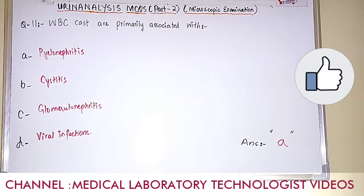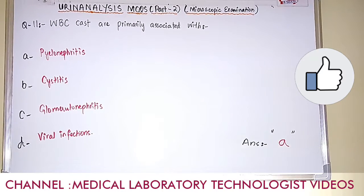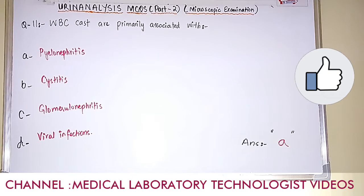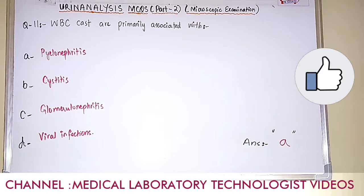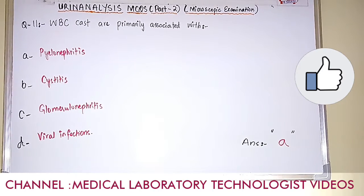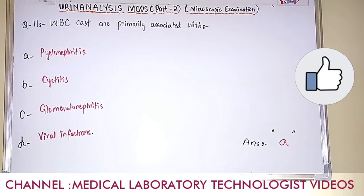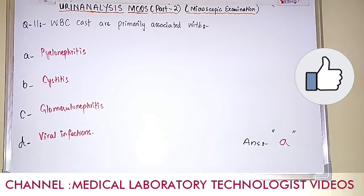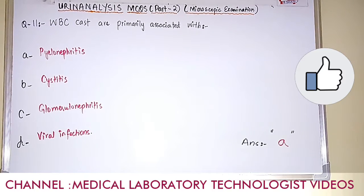Question number 11. WBC casts are primarily associated with. Option A: pyelonephritis. Option B: cystitis. Option C: glomerulonephritis. Option D: viral infection. The answer is option A, pyelonephritis. Pyelonephritis means inflammation of the kidney, mostly due to bacterial infection. In that case you will find WBC casts.